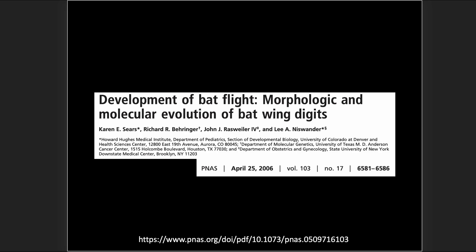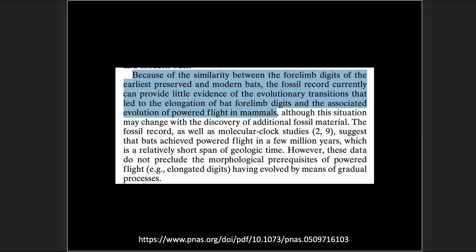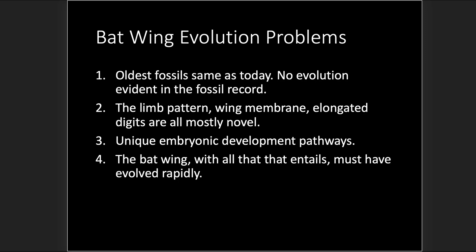Here's a paper on the development of bat flight. It states: 'Because of the similarity between the forelimb digits of the earliest preserved and modern bats, the fossil record currently can provide little evidence of the evolutionary transitions that led to the elongation of bat forelimb digits and the associated evolution of powered flight in mammals. The fossil record, as well as molecular clock studies, suggest that bats achieved powered flight in a few million years, which is a relatively short span of geologic time.' So we have another problem: the bat wing, with all that entails, must have evolved rapidly.